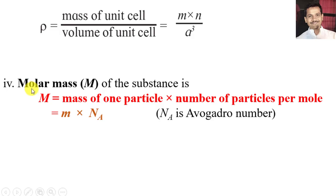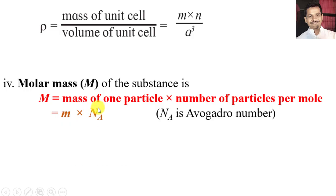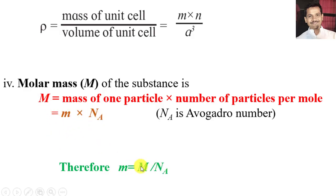Now, about the molar mass. From our knowledge we know that molar mass of a substance is given by: molar mass = mass of 1 particle × number of particles per mole. Since each mole contains Avogadro's number of particles, molar mass = mass of 1 particle × Avogadro's number. We learned this in 11th standard. From this expression, if we know the molar mass, we can say that mass of 1 atom = molar mass divided by Avogadro's number. This is a derived formula.